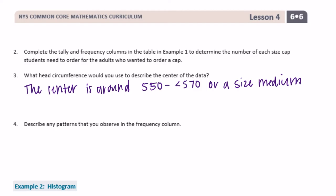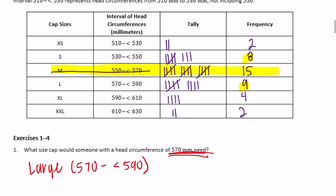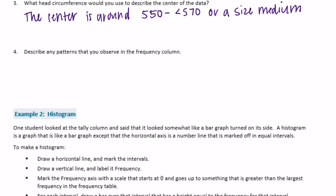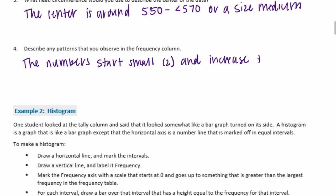Describe any patterns you observe in the frequency table. It seems the numbers start small, get bigger, reach the largest value of 15, and then taper off toward the end. So the numbers start small at 2, increase to 15, and then go back down.